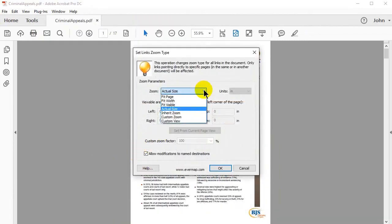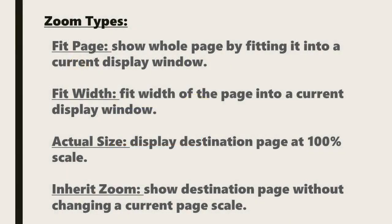In the window that opens, select a zoom type from the drop-down list. You have multiple options: Fit Page, to show the whole page by fitting it into the current display window; Fit Width, to fit the width of the page into the current display window; Actual Size, to display the destination page at 100% scale; and Inherit Zoom, to show the destination page without changing the current page scale.